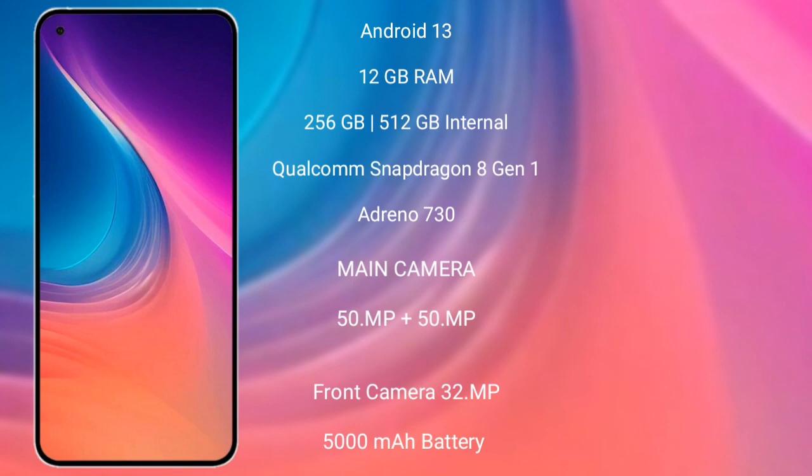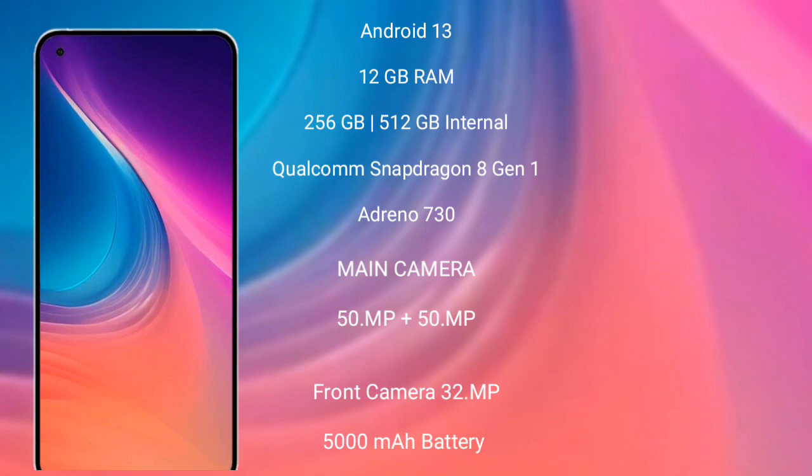Nothing Phone 2 features a rear dual-camera setup with 50MP plus 50MP, and its front camera is 32MP. It has a 5000mAh battery with 67W fast charging support.